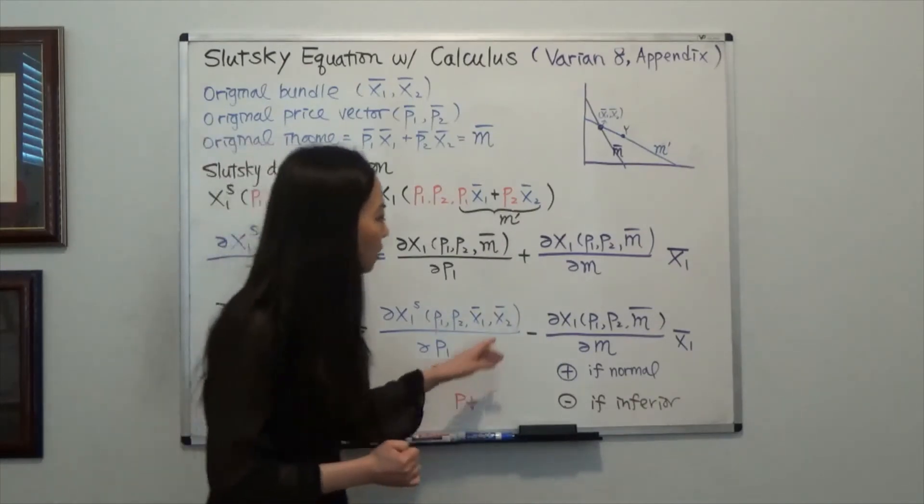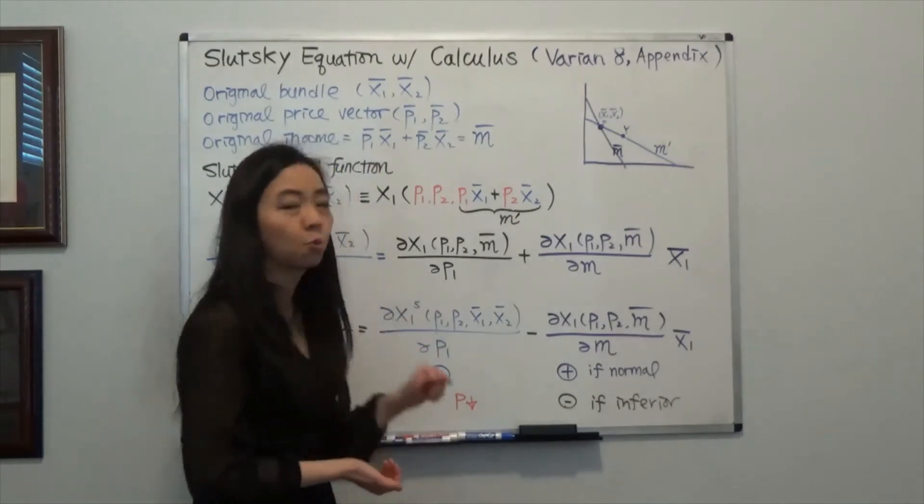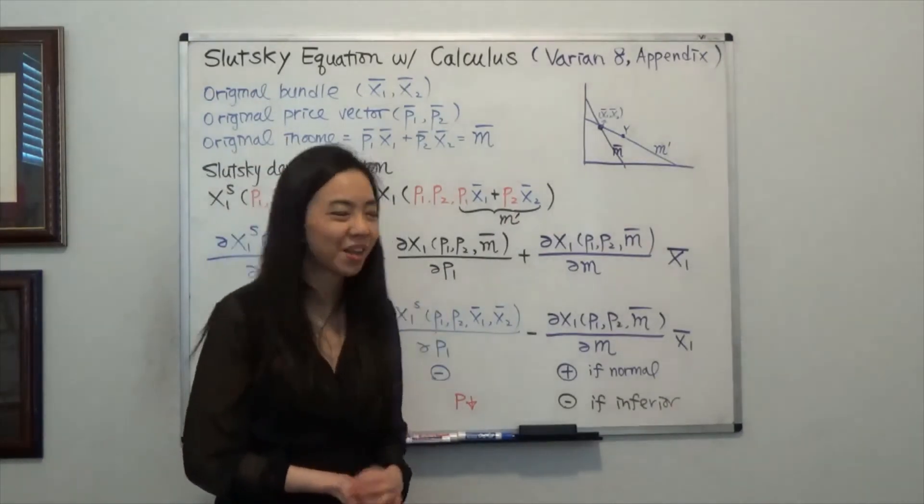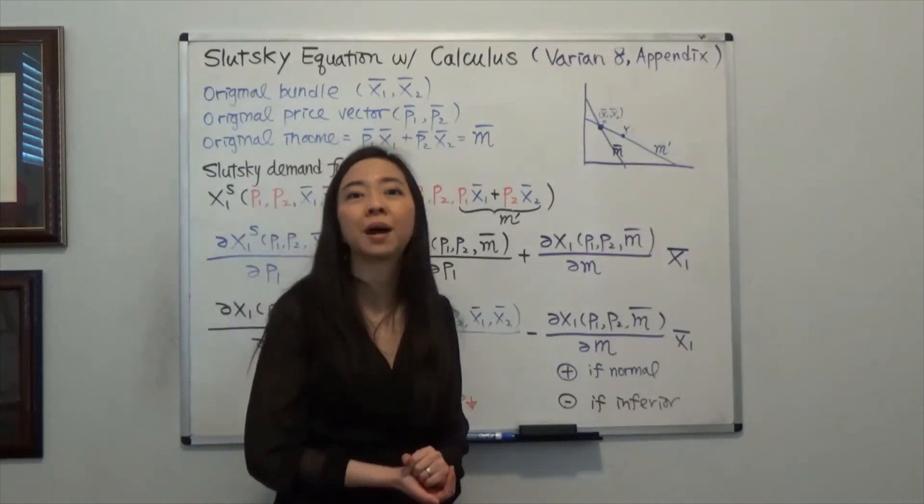What about income effect? Now, let's assume that good one is a normal good. So when the price of good one goes down, you'll feel that, hey, I'm relatively wealthier and good one is a normal good.